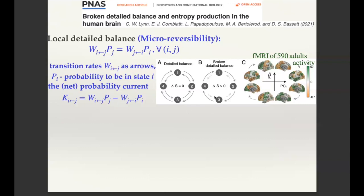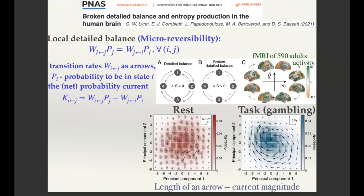They compared two scenarios: the resting state and the gambling state. In the resting state, the two coordinates are the two PCA components. The color represents the probability distribution (occupancy), and the length of the arrows represents the magnitude of the microscopic current. They see that in the resting state, the magnitude of the current is much smaller — about one order of magnitude smaller — than in the gambling state.